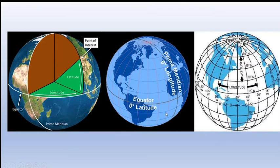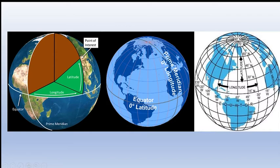Longitude refers to vertical great circles drawn from north pole to south pole. The reference point is the Greenwich Meridian Observatory — chosen for purely political reasons. If you are east of England you have positive longitude, west gives negative longitude. Since the full circle is 360 degrees and 15 degrees equals one hour, India is 82.5 degrees east, meaning 5 hours and 30 minutes ahead of England's time.